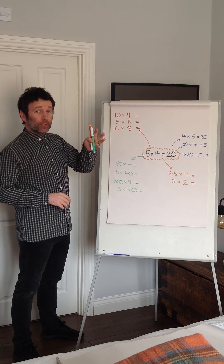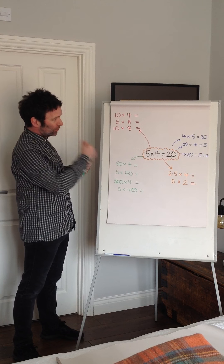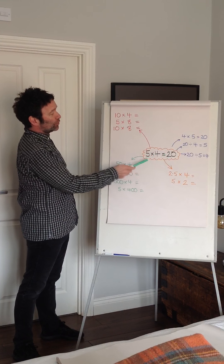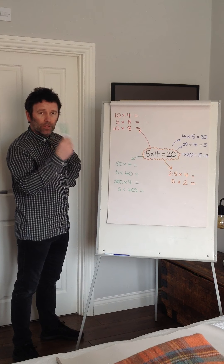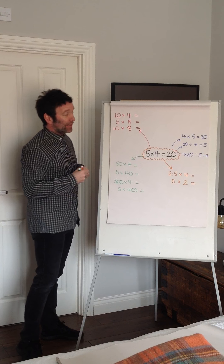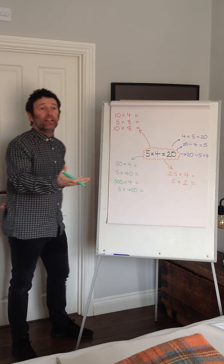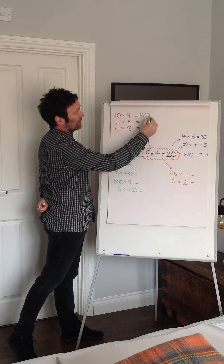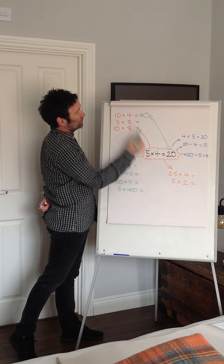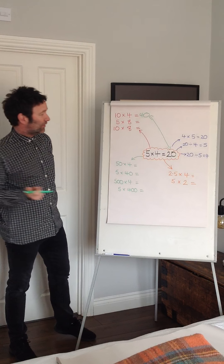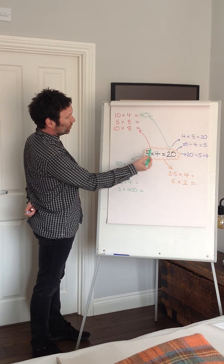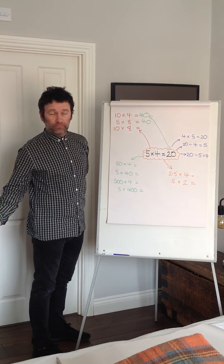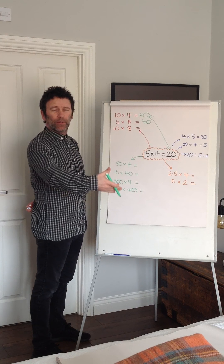What we can then start to do is experiment a little bit. Once they're quite secure with that, we might look at: what happens if I double one of the numbers? So I've got 5 times 4 is 20 — what if I double this and make it 10? How does that impact on the answer? You can use a calculator. What I want to draw attention to is the fact that when I double one of the numbers, the answer doubles itself.